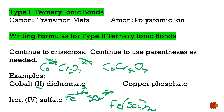Last Type 2 formula example: copper phosphate. The first thing you should ask is — is copper a transition metal? Yes, it is. But there's no Roman numeral, so do you remember what charge we assume? We assume 1+ if there's no Roman numeral. So copper has a 1+ charge. Phosphate is PO4 with a 3− charge. Crisscross: copper gets the 3 and PO4 gets the 1. Our formula is Cu3PO4. Not much has changed — crisscrosses and parentheses where needed.